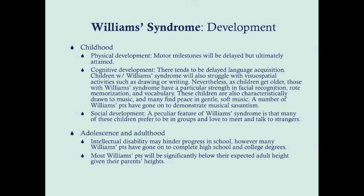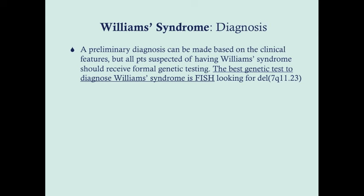In adolescence and adulthood, intellectual disability can hinder school progress, though the range is wide — some Williams syndrome patients have completed high school and college degrees. Most will be significantly below expected adult height given their parents' heights. Diagnosis should be confirmed with formal genetic testing; the best test is fluorescence in situ hybridization (FISH), specifically looking for the deletion on 7q11.23.